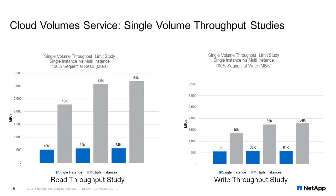Now looking at sequential I/O: blue represents single instance and gray represents multiple instances. The maximum throughput a single instance is able to drive is right at the 4 to 4.5 gigabit per second line. On the right side we see the same throughput limit at about 500 megabits per second, or about 4 to 4.5 gigabits per second — whether this is the egress limit through the virtual private gateway or the VPC limit.